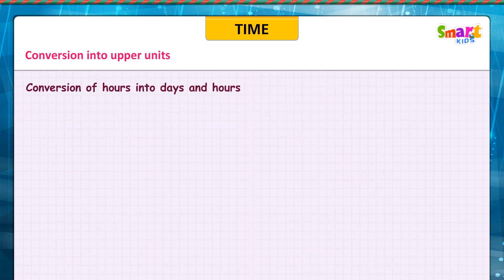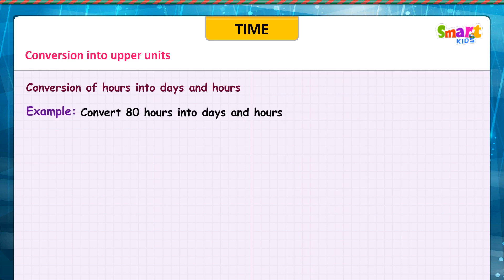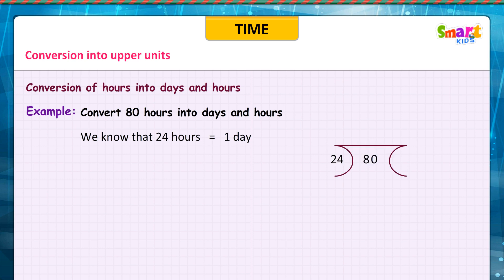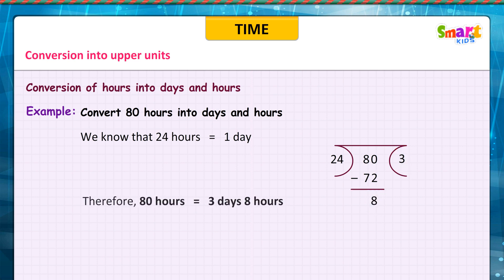Conversion of hours into days and hours. Example: convert 80 hours into days and hours. We know that 24 hours is equal to 1 day. 80 divided by 24 goes 3 times with a remainder of 8. Therefore, 80 hours is equal to 3 days 8 hours.